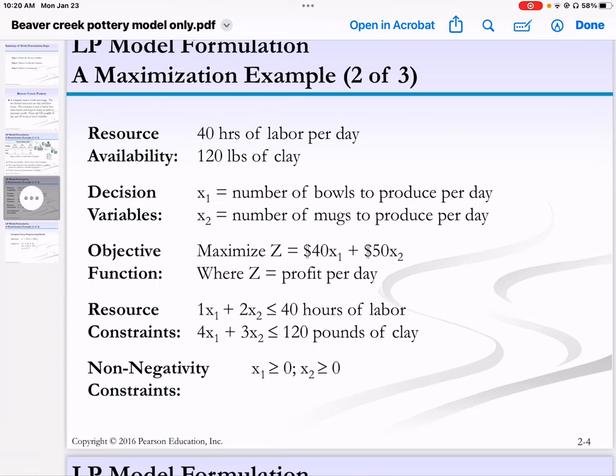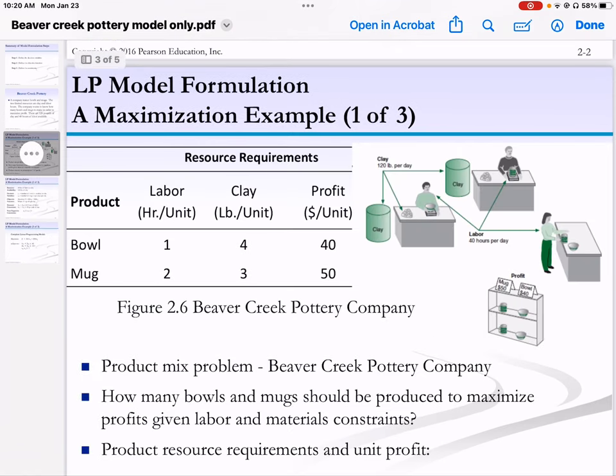Our other constraint is limited clay. Let's go back and look at our table. We need four pounds per bowl and three pounds per mug for clay.